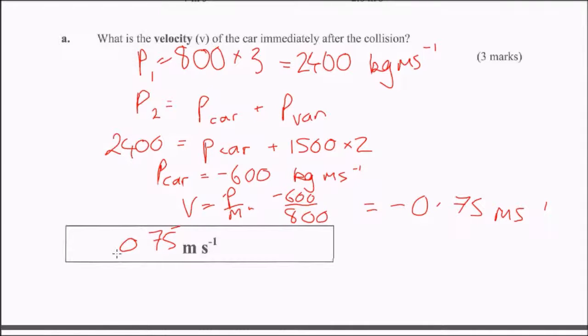Now, they say, what is the velocity? This is important because they actually are looking for the direction. So, I think if you said it was minus 0.75 meters per second, that would be okay, or the other thing I think you could say is that it was 0.75 meters per second to the left. Either of those, I think, would be an acceptable answer.